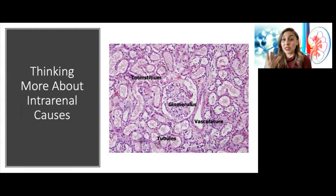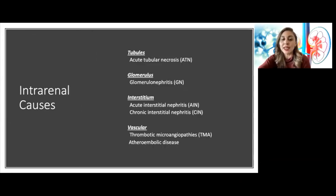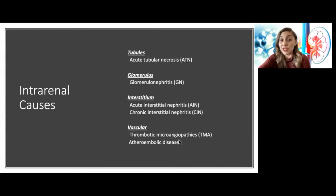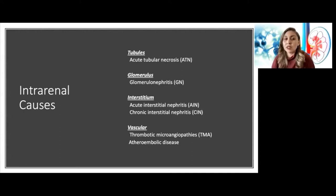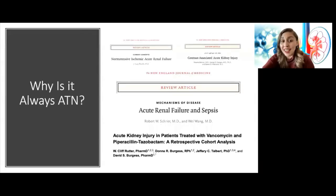The framework for intra-renal AKI has four categories: the interstitium, the glomerulus, the vasculature, and the tubules. For tubules, we're talking about ATN — acute tubular necrosis. For the glomerulus, we're talking about GNs. For the interstitium, either acute or chronic interstitial nephritis. For the vascular category, mostly thrombotic microangiopathies, seen in patients who are pregnant and develop preeclampsia, or patients on medications to treat malignancies, or from malignant hypertension. In the hospital, ATN will be almost 90% of the causes of AKI, because the tubules are very sensitive.